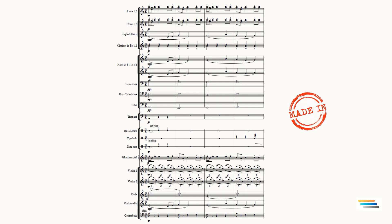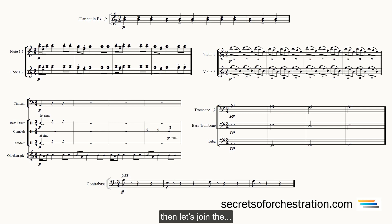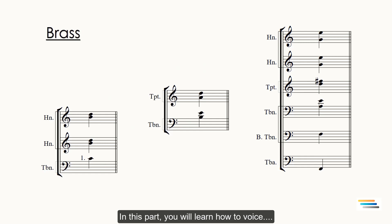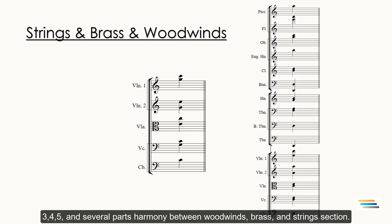If you want to learn how to find the best devices and how to get these elements and which methods have been used, then let's join SecretsOfOrchestration.com. For getting discounted price, click the link below the video. What you will learn during two semesters? Part 1: Orchestral Chord Voicings. In this part, you will learn how to voice three, four, five, and several parts harmony between woodwinds, brass, and string section.